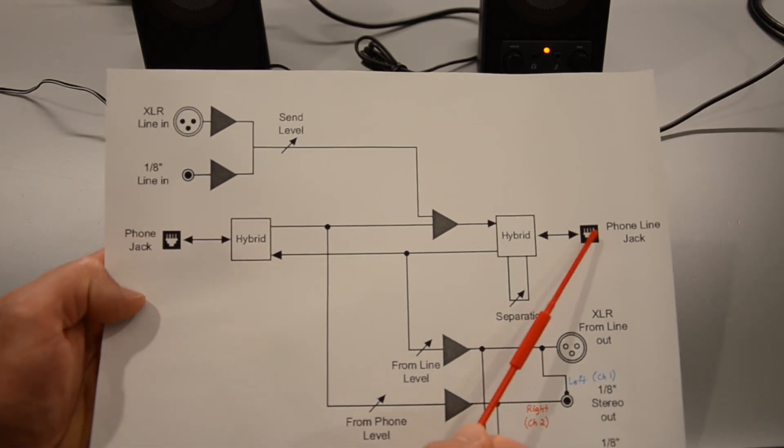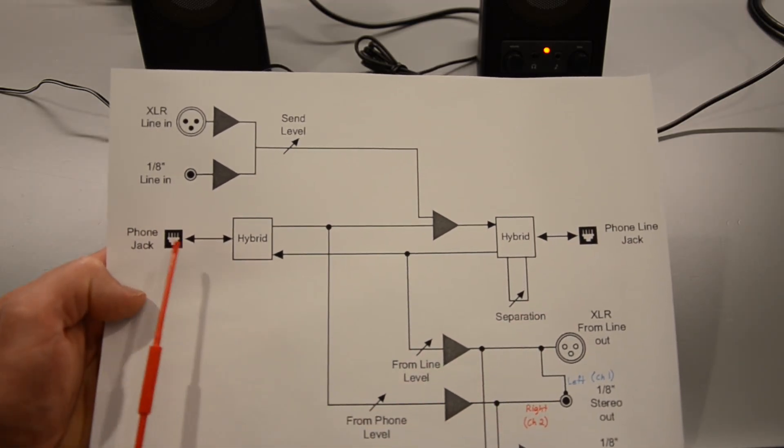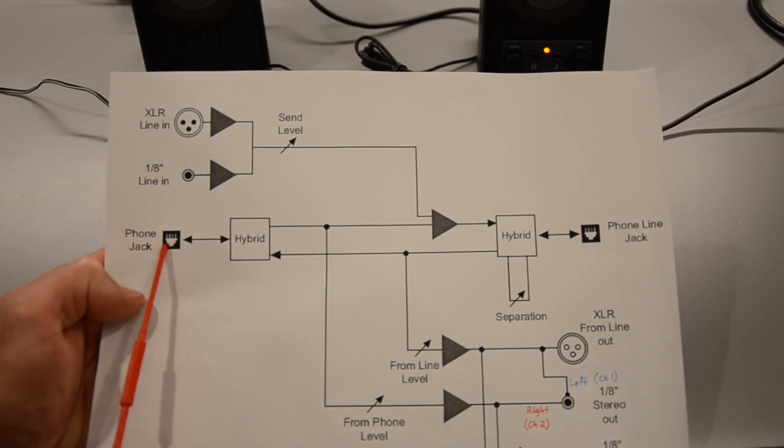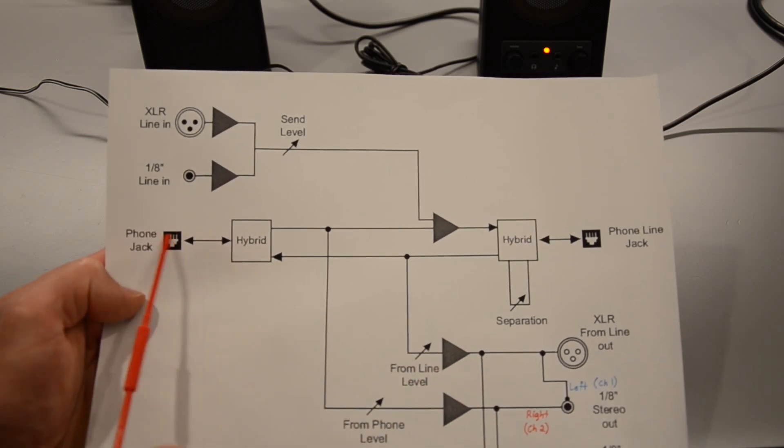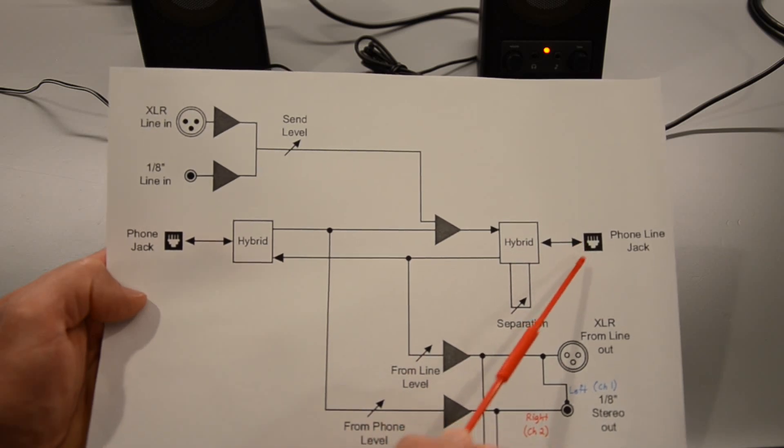You plug in the phone line to this port here, and you can optionally connect a phone to this port here. This pair of hybrids separates the audio path coming from the phone to the phone line, and vice versa.